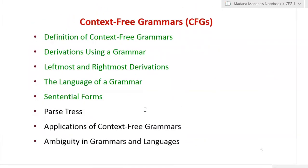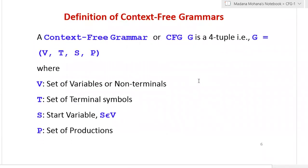The agenda of today's lecture: introduction to context-free grammars, definition of a context-free grammar, what is a derivation, how to define a derivation using context-free grammar, types of derivations — leftmost and rightmost. Then how to find the language of a context-free grammar, what is a sentential form, and what are the various types of sentential forms.